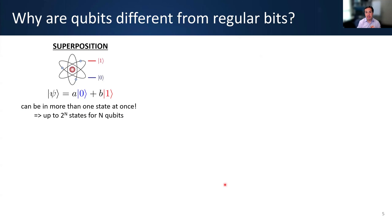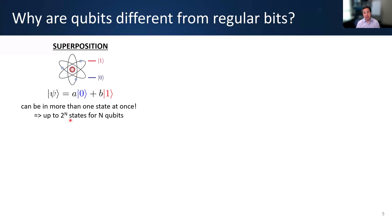One way qubits differ from regular bits is superposition — the idea that a quantum state doesn't have to be just one or the other. It can be in both states at the same time, represented by complex amplitudes A and B. If you have n qubits, there are two-to-the-n possible states, and you can be in multiple of those — including all two-to-the-n at the same time. This is one of the important weird things about quantum mechanics that sets qubits apart.